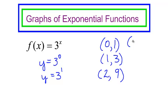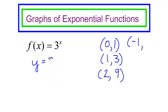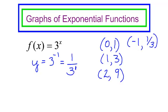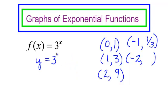What if I pick a negative number? Negative 1 will give 3 to the negative 1. Remember your rules for exponents — whenever you have a negative exponent, you move that term to the denominator. So 3 to the negative 1 is 1 over 3, which is simply 1 third. If I pick negative 2, y equals 3 to the negative 2, which equals 1 over 3 squared, which is 1 ninth.